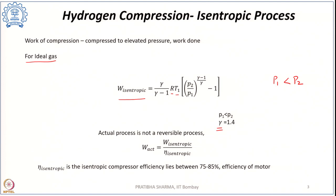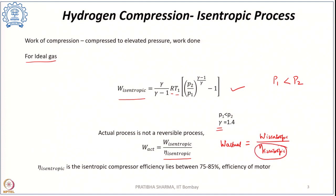This isentropic formula assumes a reversible process. But in the actual process there are several irreversibilities involved — to account for these, we include an isentropic compressor efficiency in the denominator. The actual work done is the ratio of the isentropic work to the isentropic compression efficiency. This isentropic compressor efficiency lies in the range of 75 to 80 percent. Additionally, we must include the efficiency of the motor, which lies in the range of 90 percent.